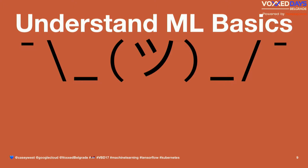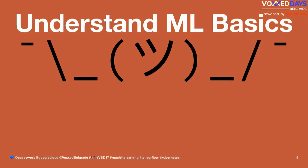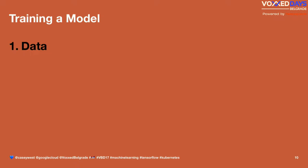Machine learning is all about the data — it's all about information. You have to have a pretty sizable amount of information to start if you're going to train a model. How many folks here have a lot of data? I work at a company that has a few copies of the internet, so we have a little data as well.